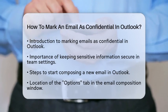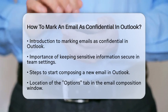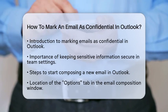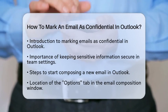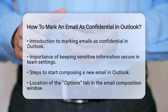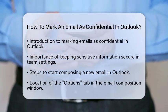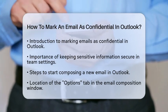First, open Outlook and click on New Email to start composing your message. Once the New Email window appears, look for the Options tab located in the ribbon at the top of the screen. This is where you can access various settings for your email.